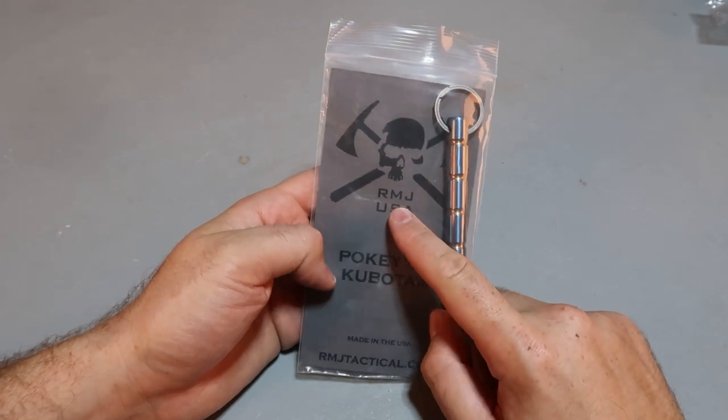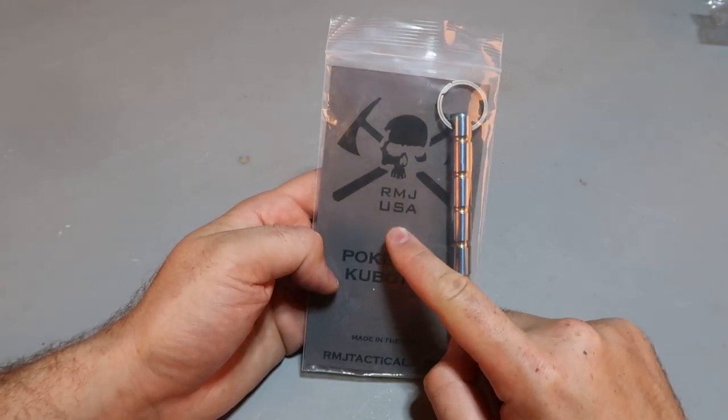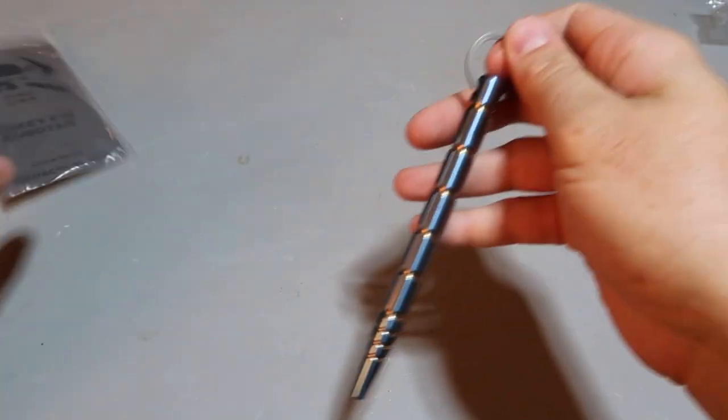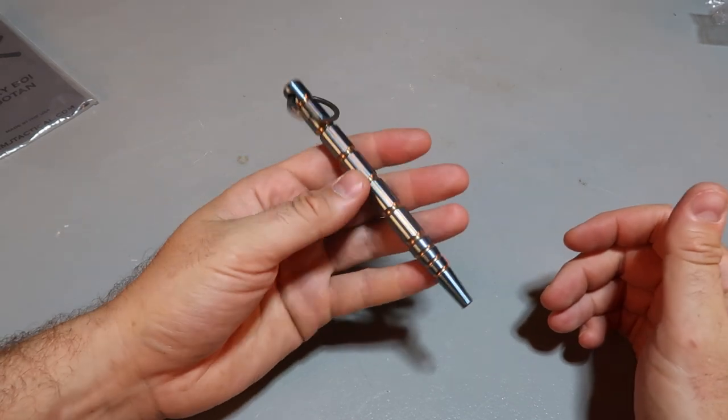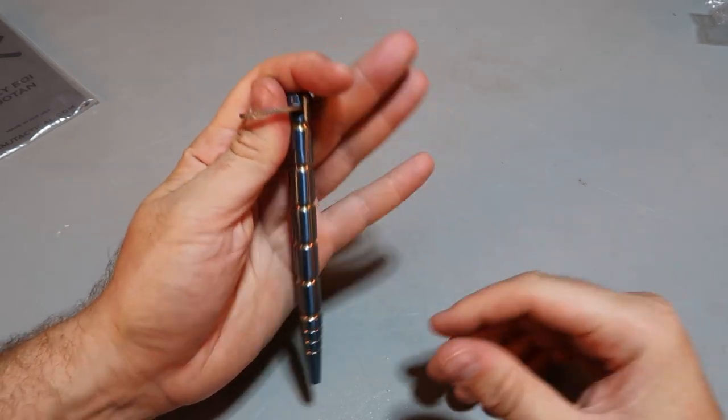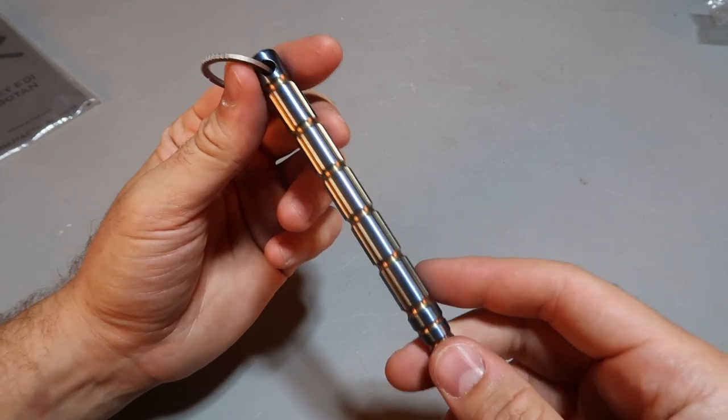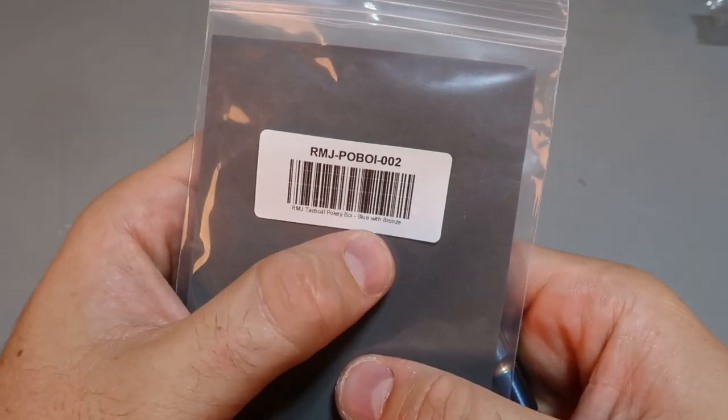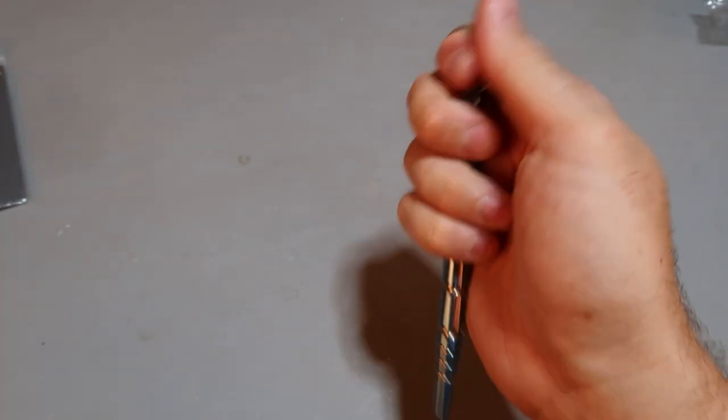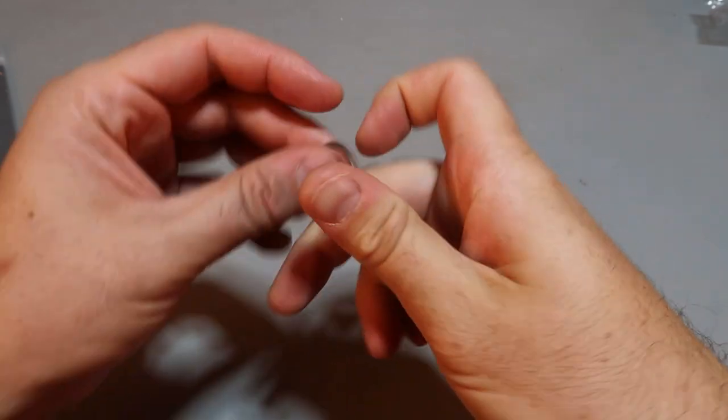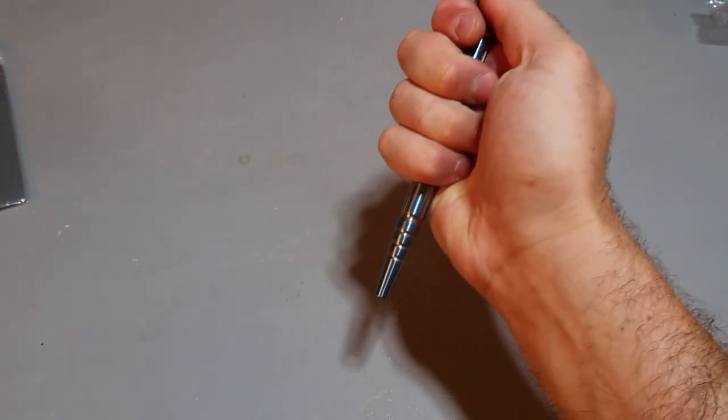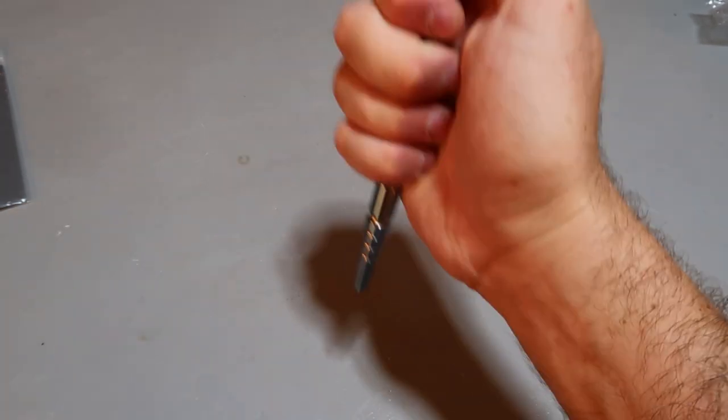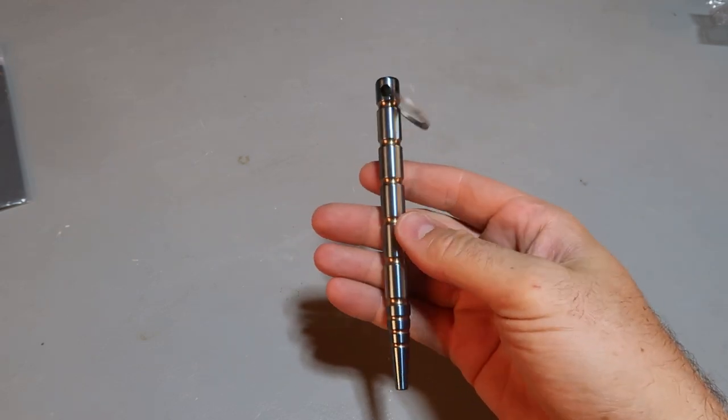Next. I got it here. Really popular maker. RMJ USA. Pokeboy Kubaton. Kubaton. Not really sure. So looks like a pen. Titanium. So pretty lightweight. Anodized blue. I don't know. Titanium or brass. Let's see if it does say. Okay. It says blue with bronze. So probably it's titanium. Real like EDC item. Pokeboy. Very cool. Not really a pen. But there you go. Quite stylish and unique.